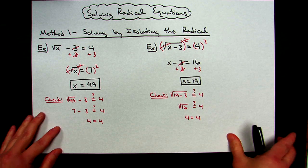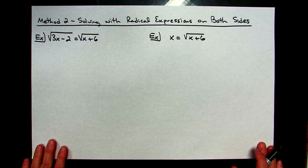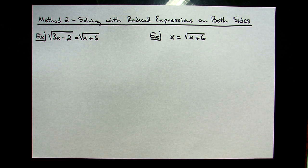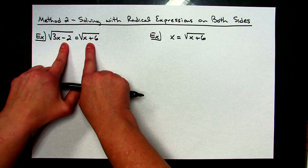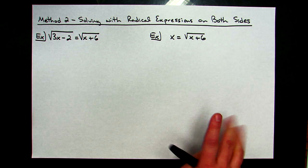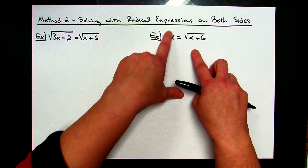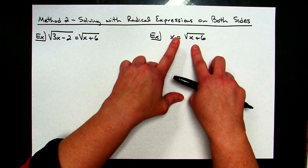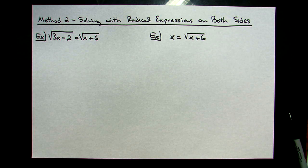Now for method two — there is another way to solve radical equations. If you have a square root on both sides of the equal sign, you can immediately go to squaring both sides to get rid of the radical. And even though in this example I only have a square root on one side and a plain number on the other, I can still immediately square both sides.